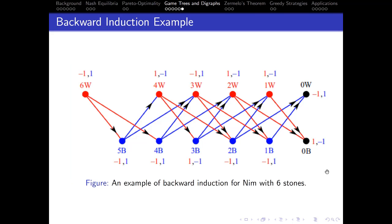Let's look at backward induction on Nim with six stones. At the zero point, you know who won based on who took the last stones. If one stone remains, that player can simply take it and win, so they expect a win. Same at two stones — the player can either take one stone, making the other player win, or take both and win; of course they choose to win. So the expected payout starting with two stones is also one. However, if a player starts their turn with three stones, whichever option they take gives the other player a win scenario — so regardless of what they pick, they expect to lose, giving a payoff of negative one for the current player.